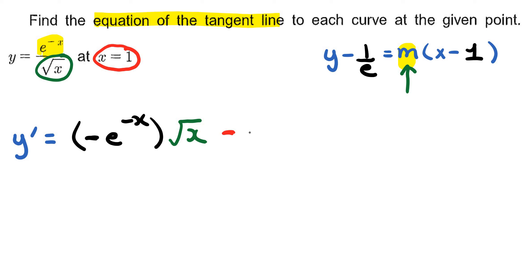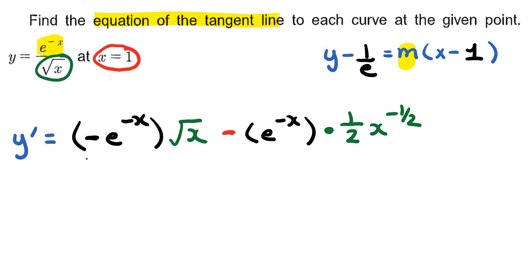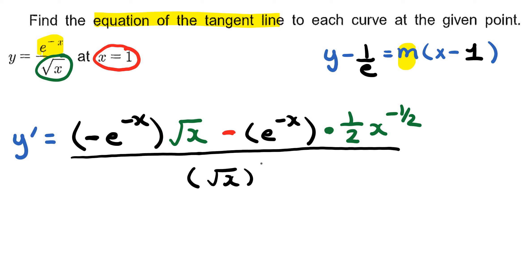Then I multiply by the derivative of the bottom. The bottom is root x, which is the same as x to the power of 1/2, and the derivative of x to the power of 1/2 is 1/2 times x to the power of negative 1/2. Then I divide the whole thing by the denominator all squared. That's looking good, and now we need to find the derivative value when x equals 1.